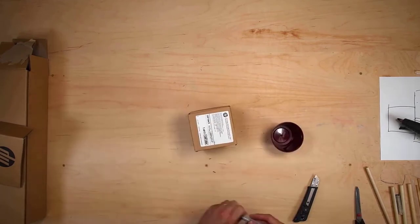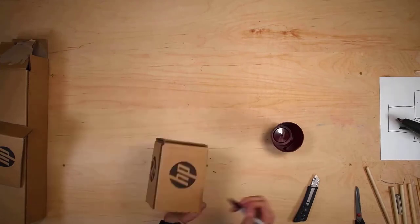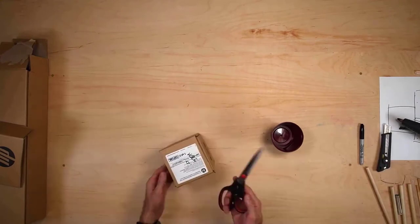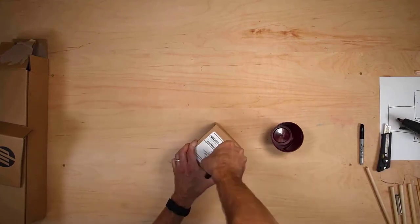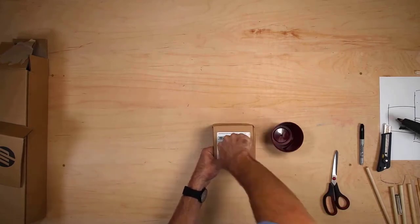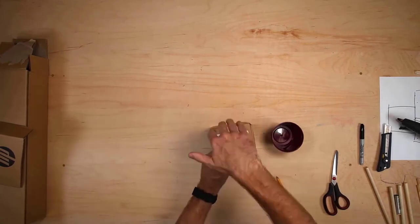Now before we do that, we're going to poke a couple holes in this box that will be very helpful for our movement mechanism. So we need one hole in the center-ish on the top of the box. We need our straw to fit into it.